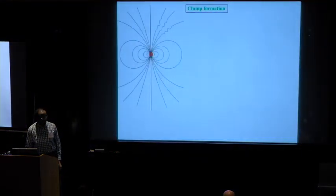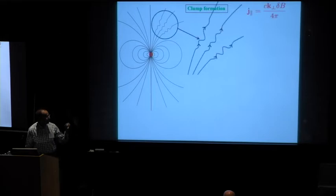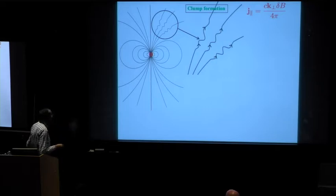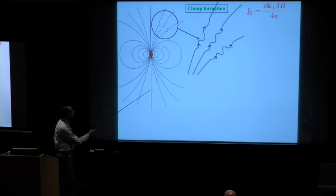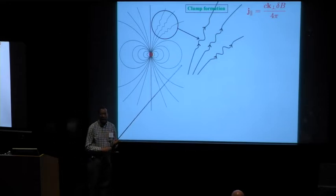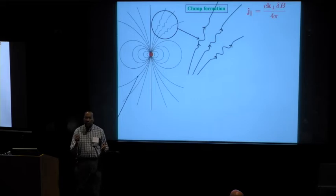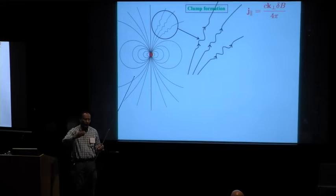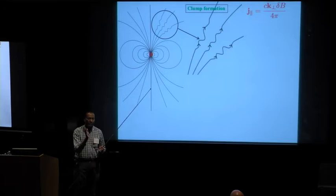The other point is that if you zoom in and look at the Alfvén waves, there is a current, a plasma current along the original magnetic field line, as long as the wave K vector is not exactly parallel to the magnetic field. So there is a non-zero current along the magnetic field direction.